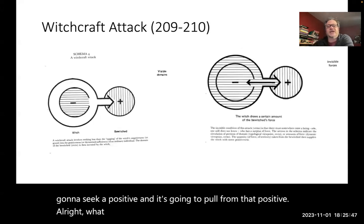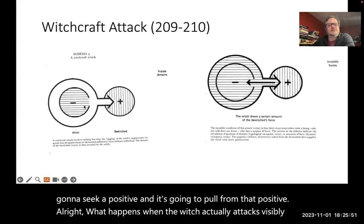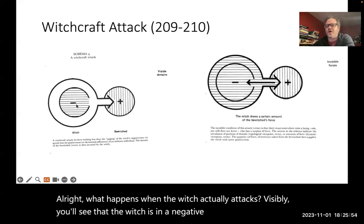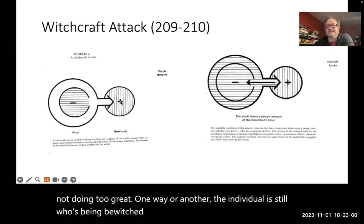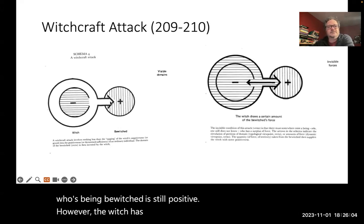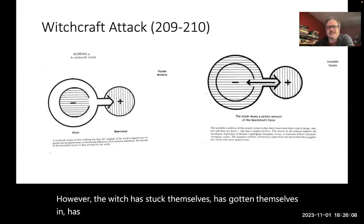What happens when the witch actually attacks? Visibly, you'll see that the witch is in a negative state. Maybe their farm's not doing too great, one way or another. The individual who's being bewitched is still positive. However, the witch has stuck themselves, has gotten themselves in, has tapped into that positive. And where does positive go? It goes to negative.